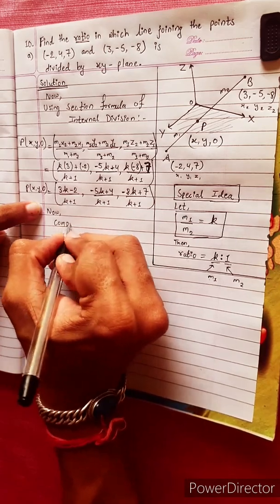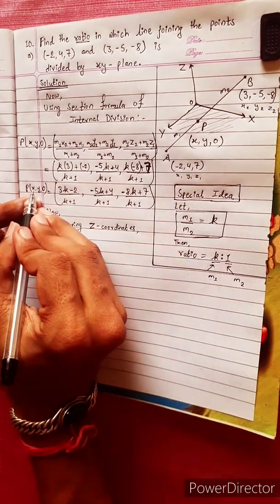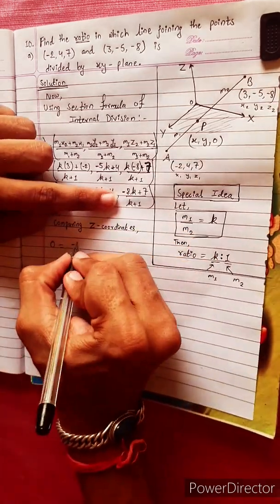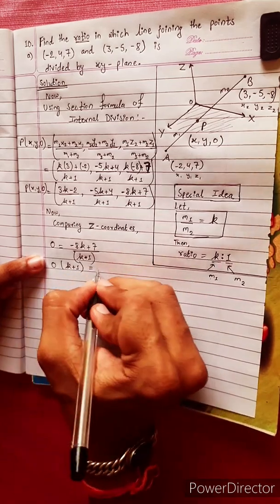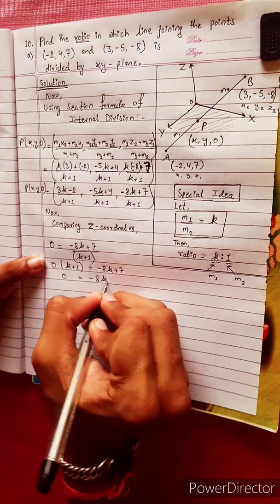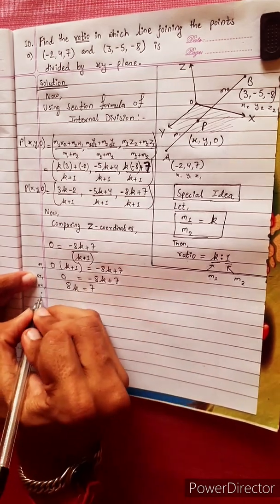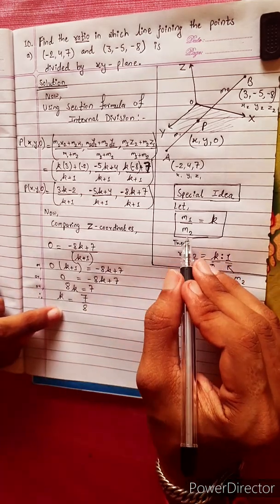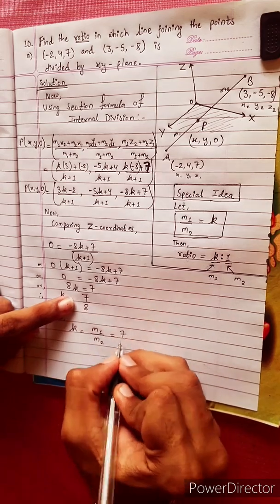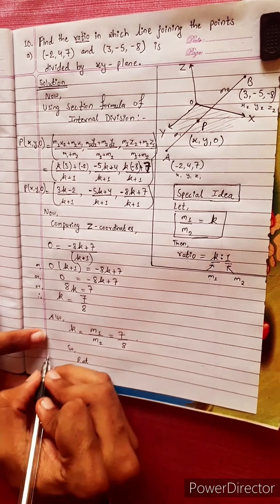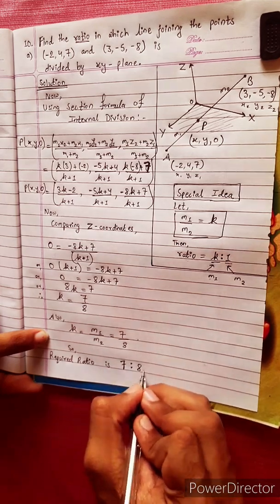Now comparing z-coordinates: since the point lies on the XY-plane, z equals 0. So 0 equals minus 8k plus 7 divided by k plus 1. This gives minus 8k plus 7 equals 0, therefore k equals 7 by 8. So the required ratio m1 to m2 equals 7 to 8.